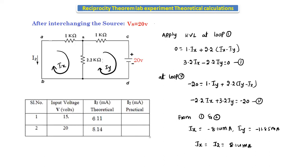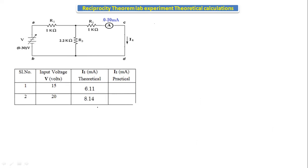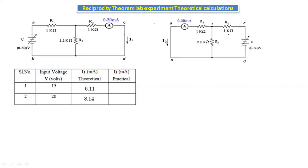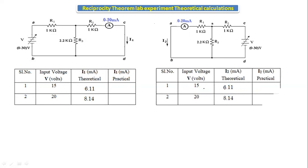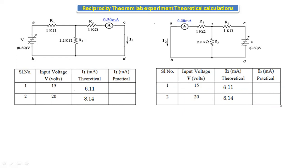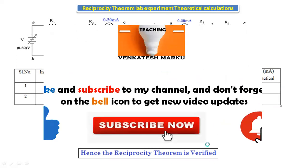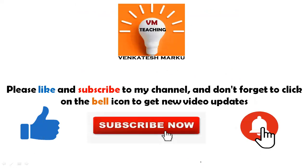After interchanging the source, at 15 volts we got 6.11 milliamps and at 20 volts we got 8.14 milliamps. Before interchanging the source, at 15 volts we got 6.11 milliamps and at 20 volts we got 8.14 milliamps. Before and after interchanging the source, the response is the same: 6.11 at 15 volts and 8.14 at 20 volts. Hence, the reciprocity theorem is verified. In the next class we will discuss further topics. Thank you.